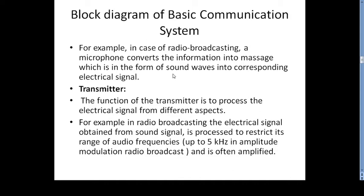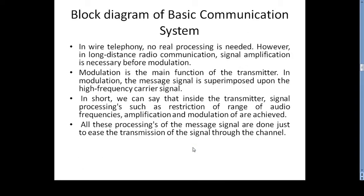The third block is the transmitter. The function of the transmitter is to process the electrical signal from different aspects. For example, in radio broadcasting, the electrical signal obtained from the sound signal is processed and restricted to audio frequencies up to 5 kHz. In amplitude modulation radio broadcast, the signal is amplified. In wire telephony, little real processing is needed; however, for long-distance radio communication, signal amplification is necessary before modulation. Modulation is the main function of the transmitter, where the message signal is superimposed upon a high-frequency carrier.